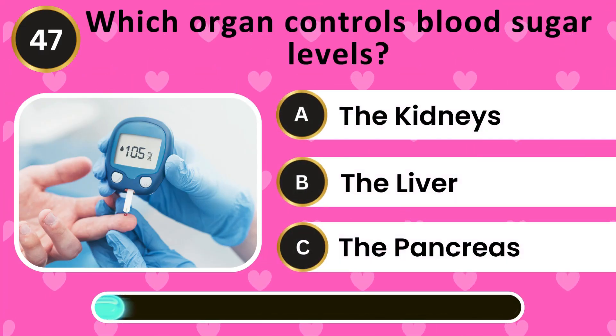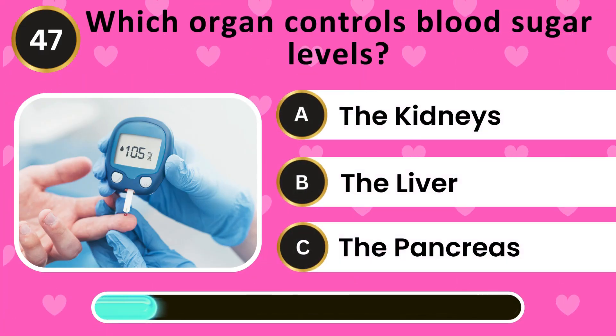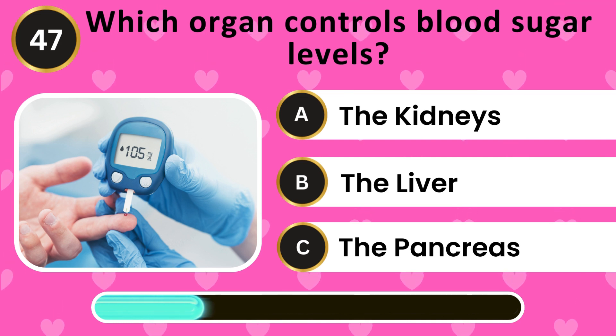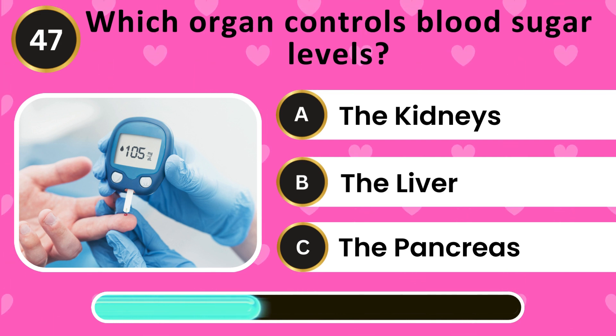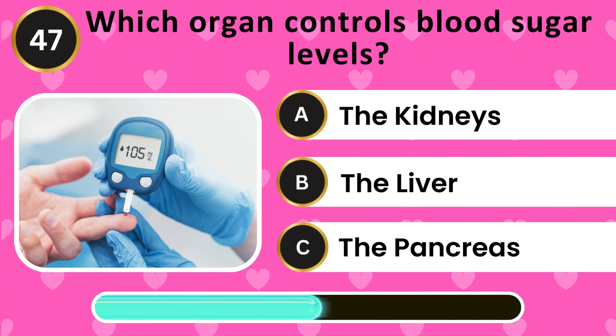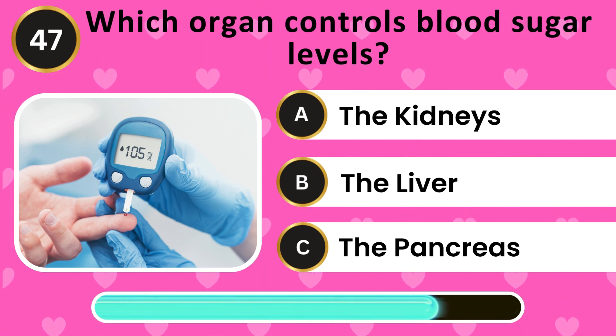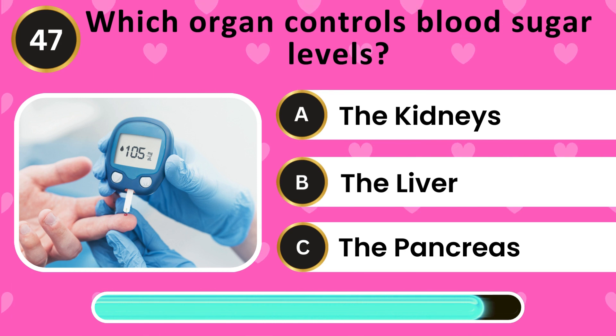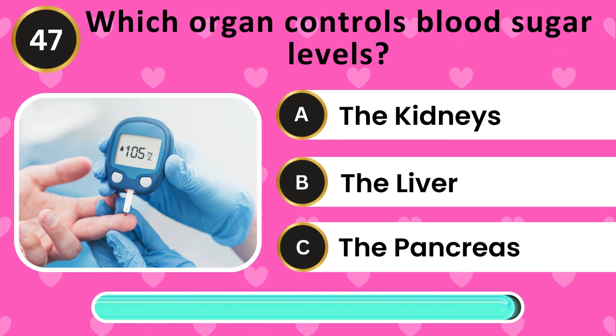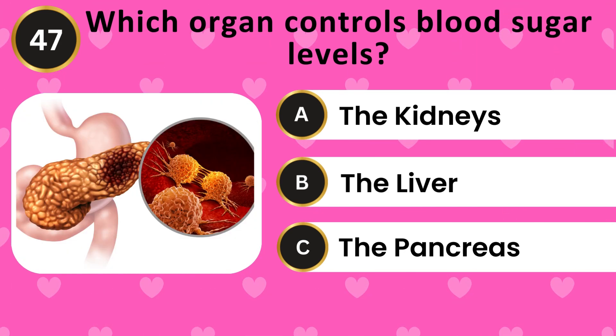Which organ controls blood sugar levels? The kidneys, the liver, the pancreas. The answer is the pancreas.